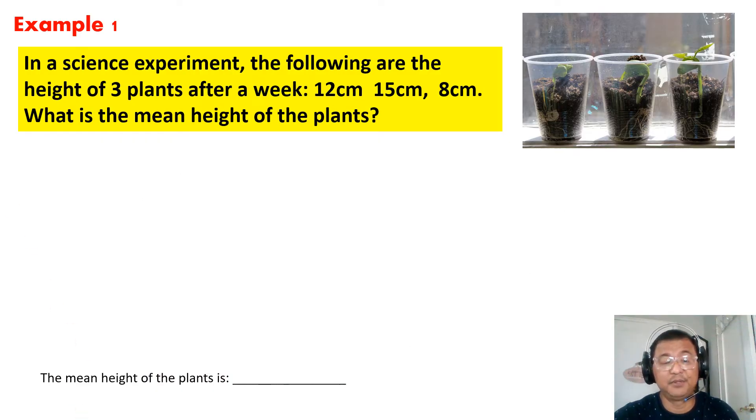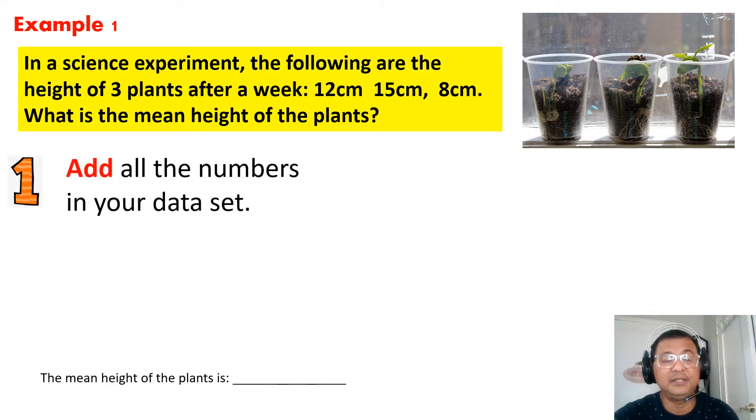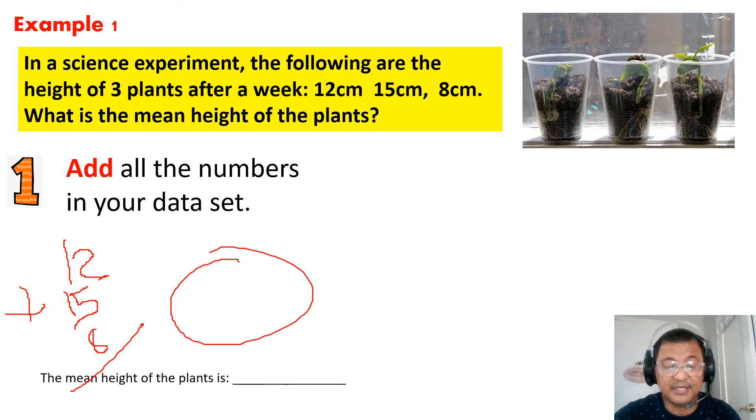Now, let's have practice number one. In a science experiment, the following are the height of three plants after a week: 12 centimeters, 15 centimeters, 8 centimeters. What is the mean height of the plant? Yes, we want to know the mean. Let's recall what is step one: add all the numbers in the data set. So everybody now, 12 plus 15 plus 8 and your total will be 35.